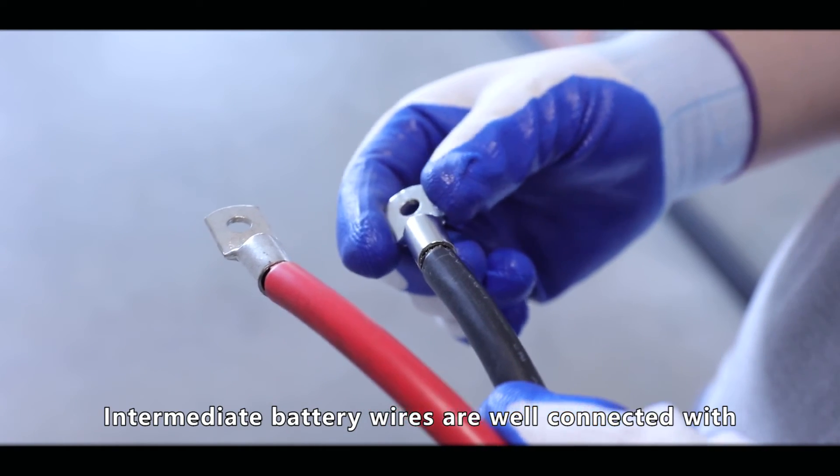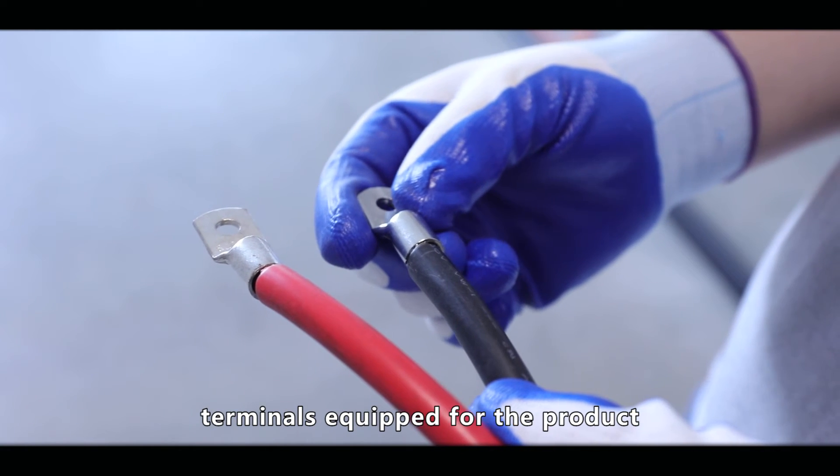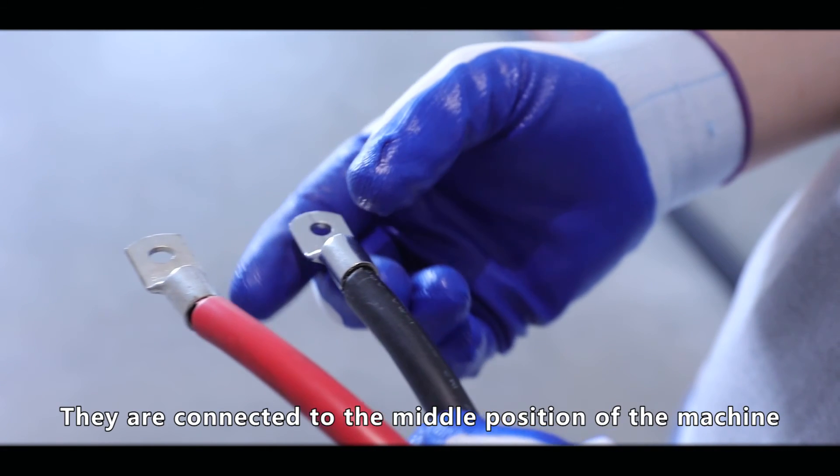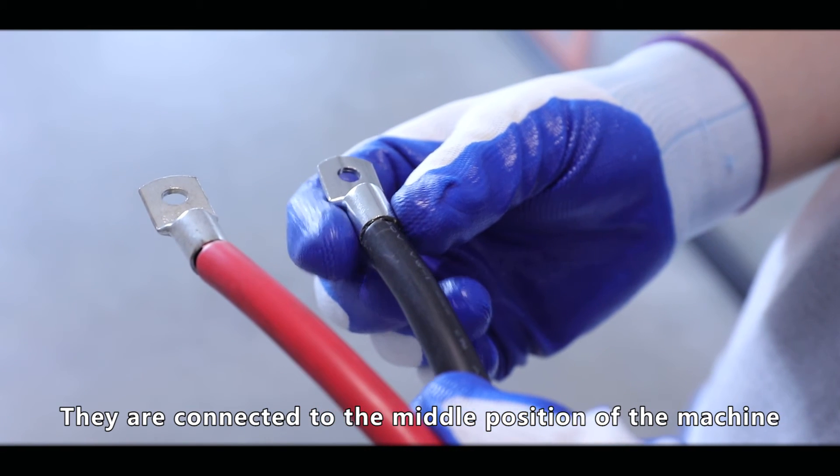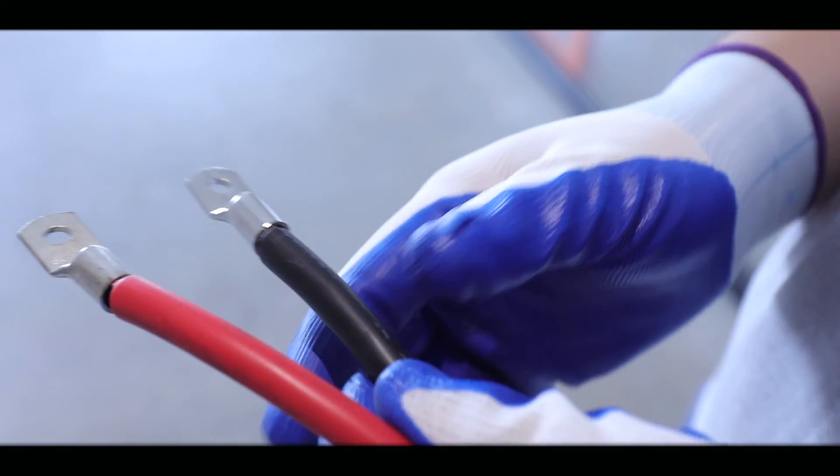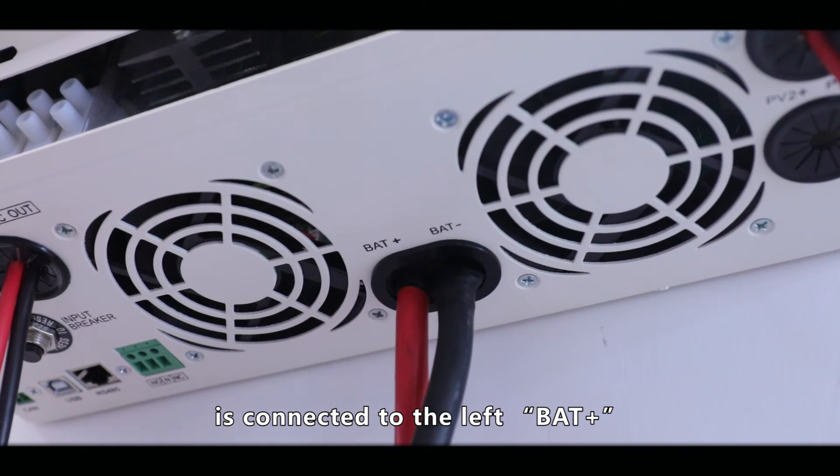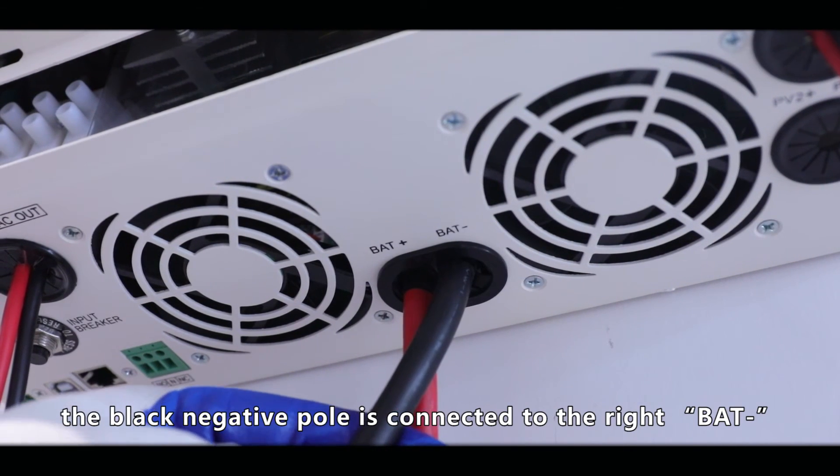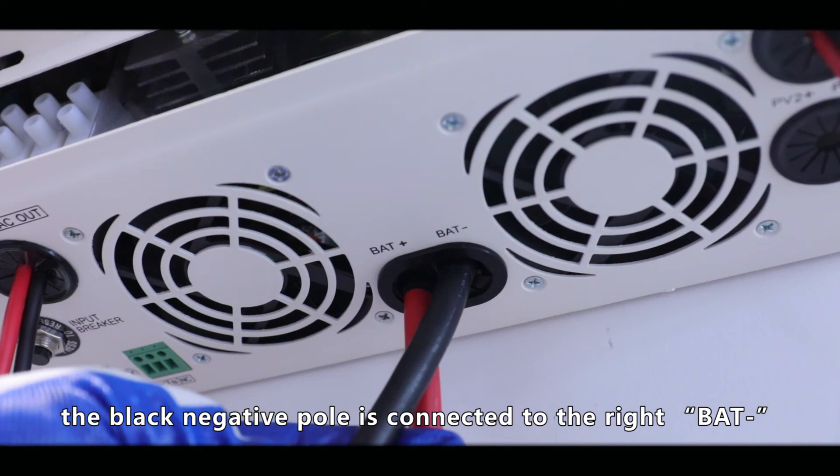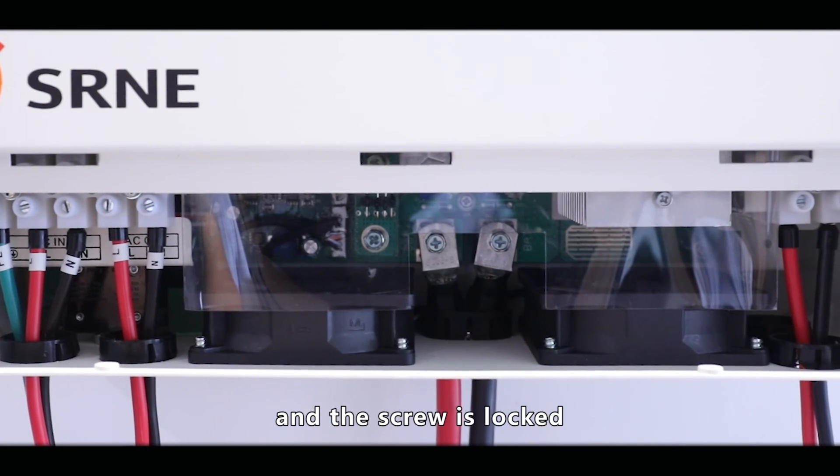The battery wires are connected with terminals equipped with the product. They are connected to the middle position of the machine through the middle black guard ring. The positive pole of the red wire is connected to the left, BAT+. The black negative pole is connected to the right, BAT-, and the screw is locked.